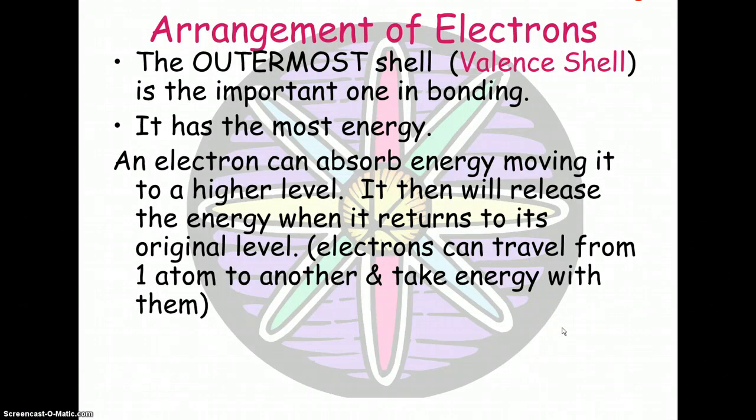If it absorbs energy, it can actually jump to a higher level, and it can then come back down and release that energy, for example, as light. Or, in some cases, the electron will actually break off and carry the energy with it. This is the basis for electron transport chains.